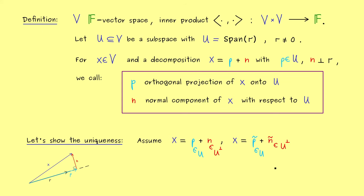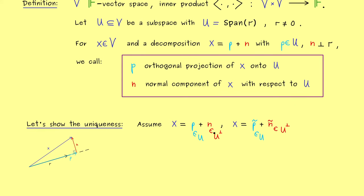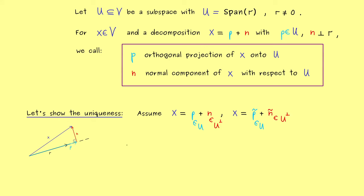Therefore now we can check if n-tilde and n are actually different. And we can examine that by putting x equals x. Or more precisely what we want is that p + n is equal to p-tilde + n-tilde. And now in the next step we can put the colors together. So let's write p - p-tilde is equal to n-tilde - n.